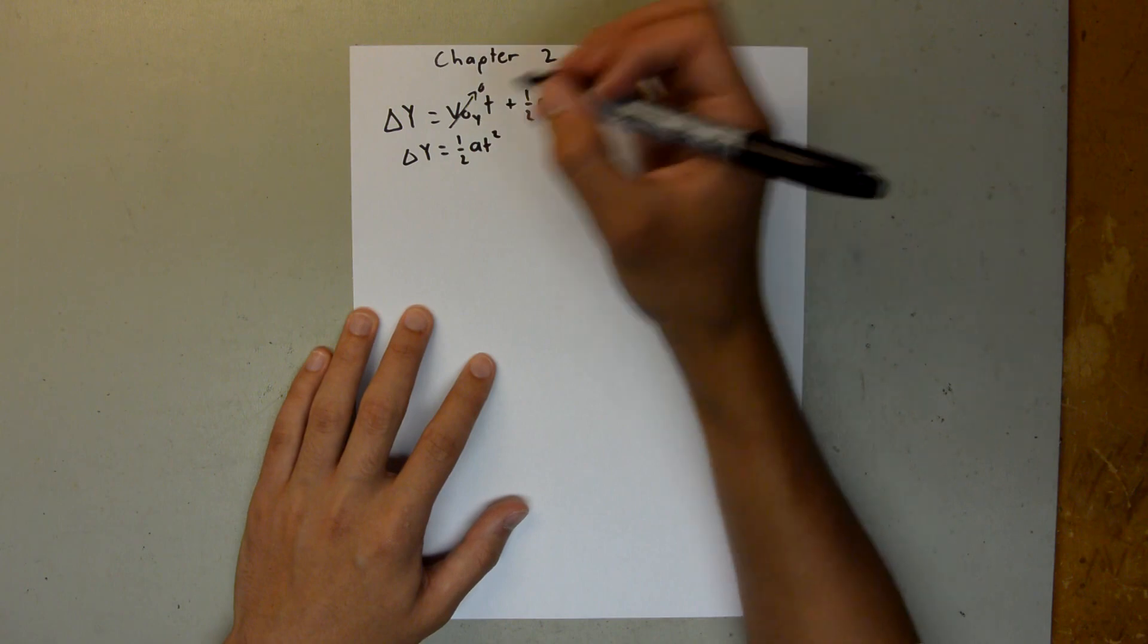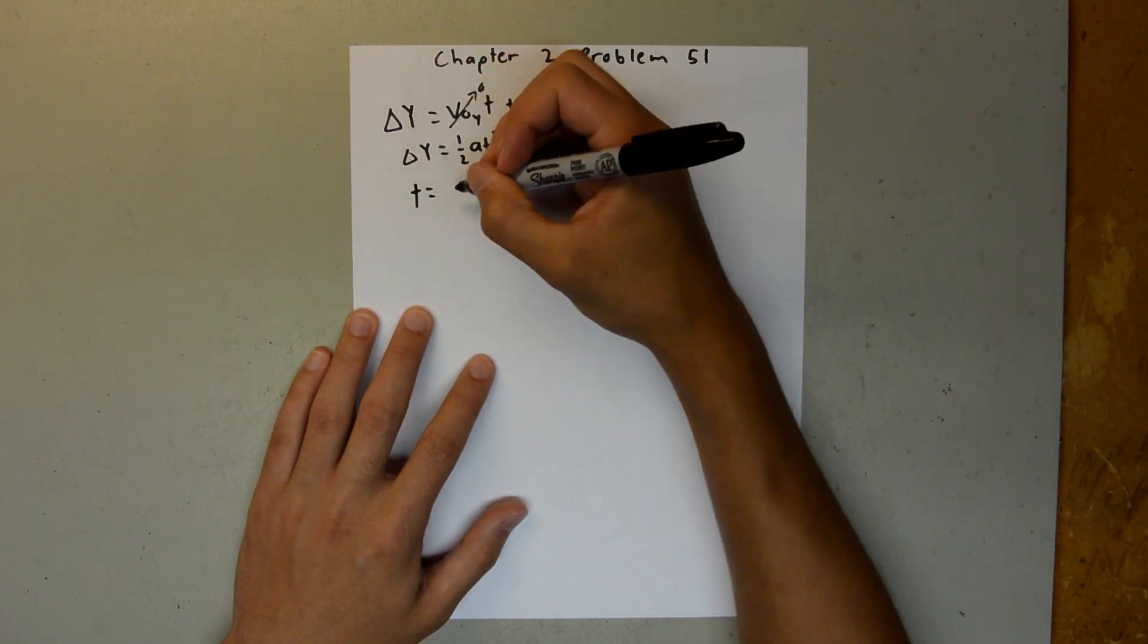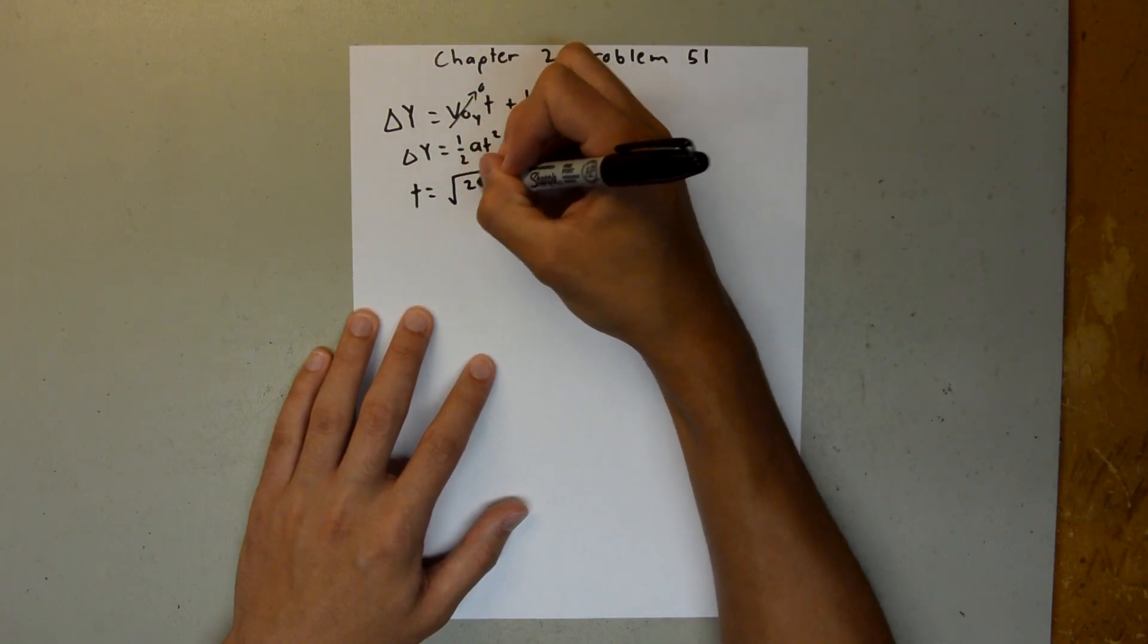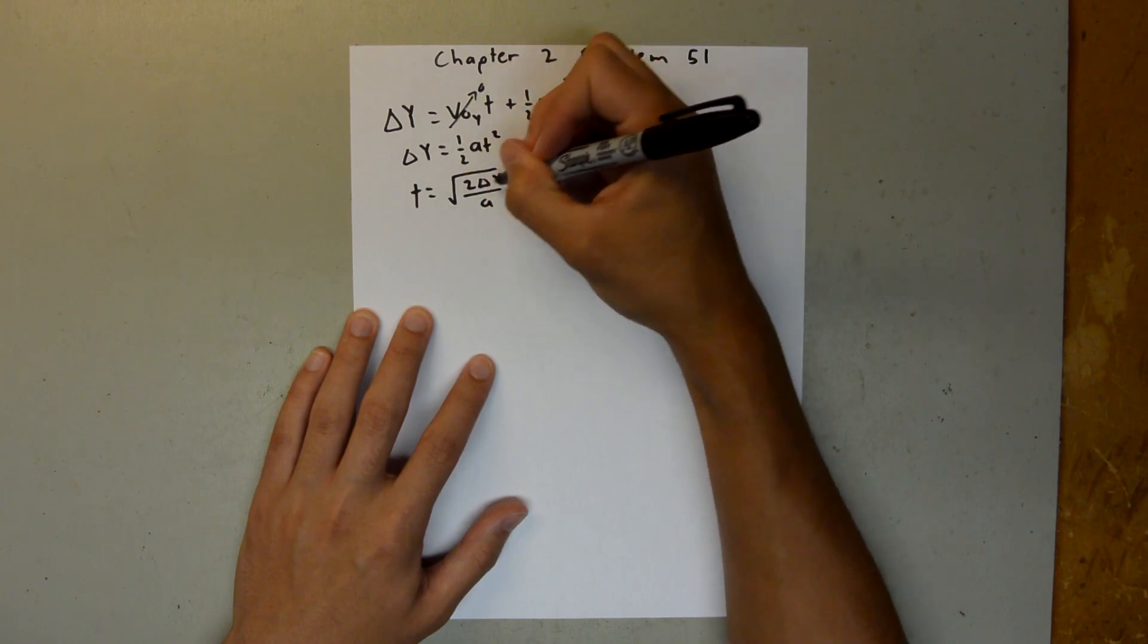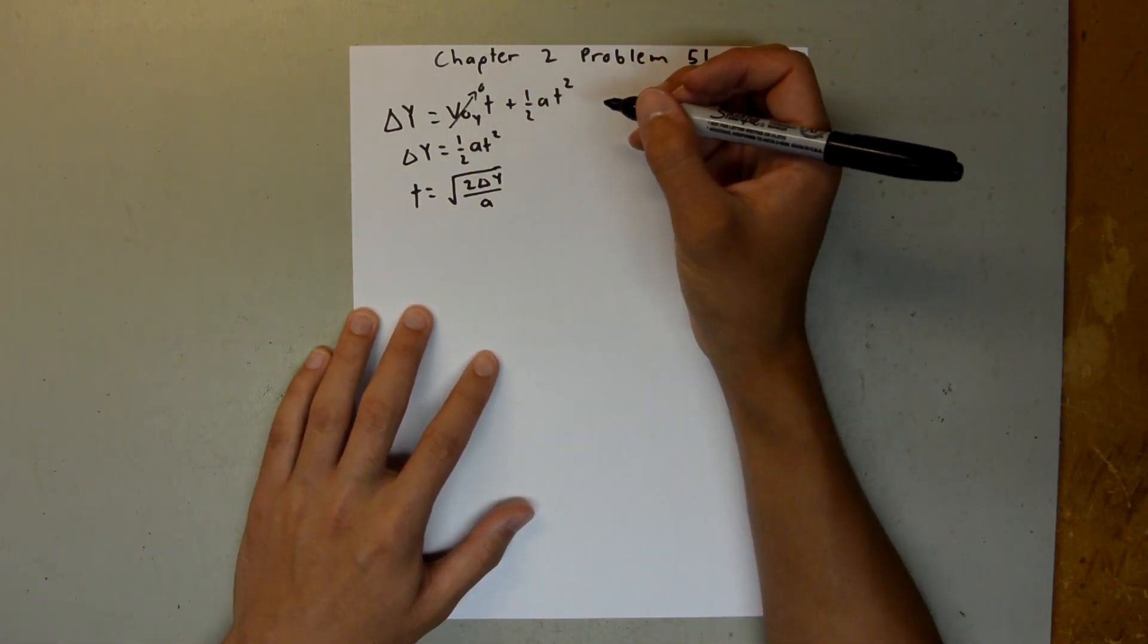And since the key is being dropped, we know that the initial velocity in the y direction is equal to 0, so we can cancel this term out, and say delta y is equal to 1 half at squared. And then we can solve this for t, and say t is equal to the square root of 2 delta y over a, and we are given those values in the problem.